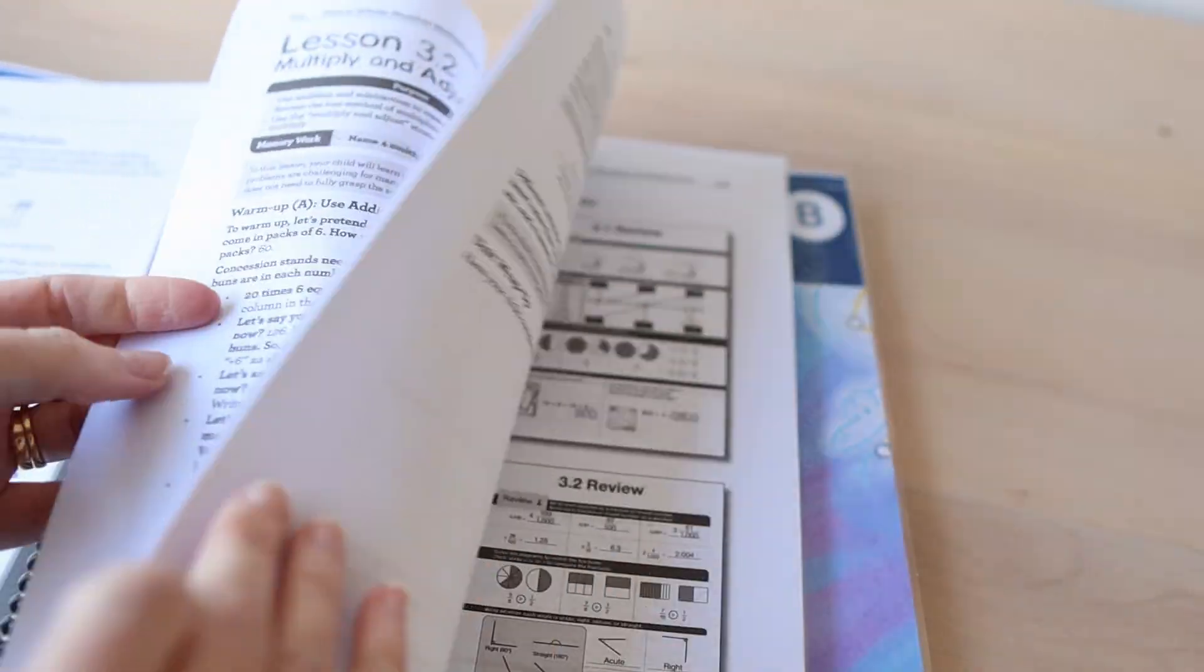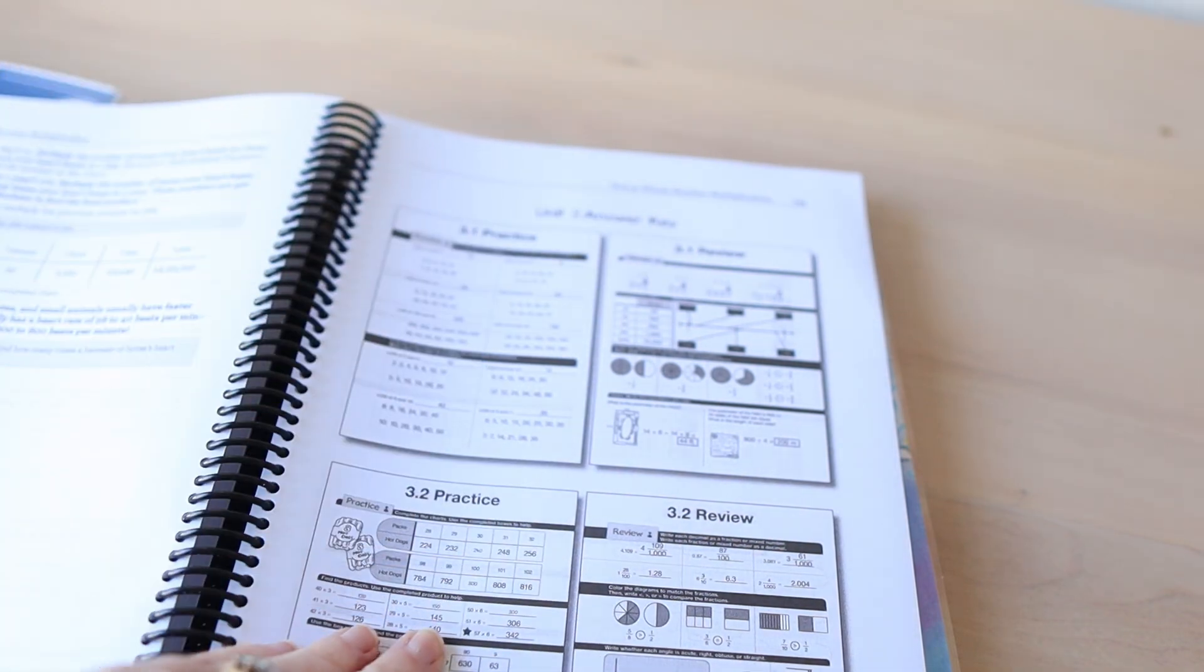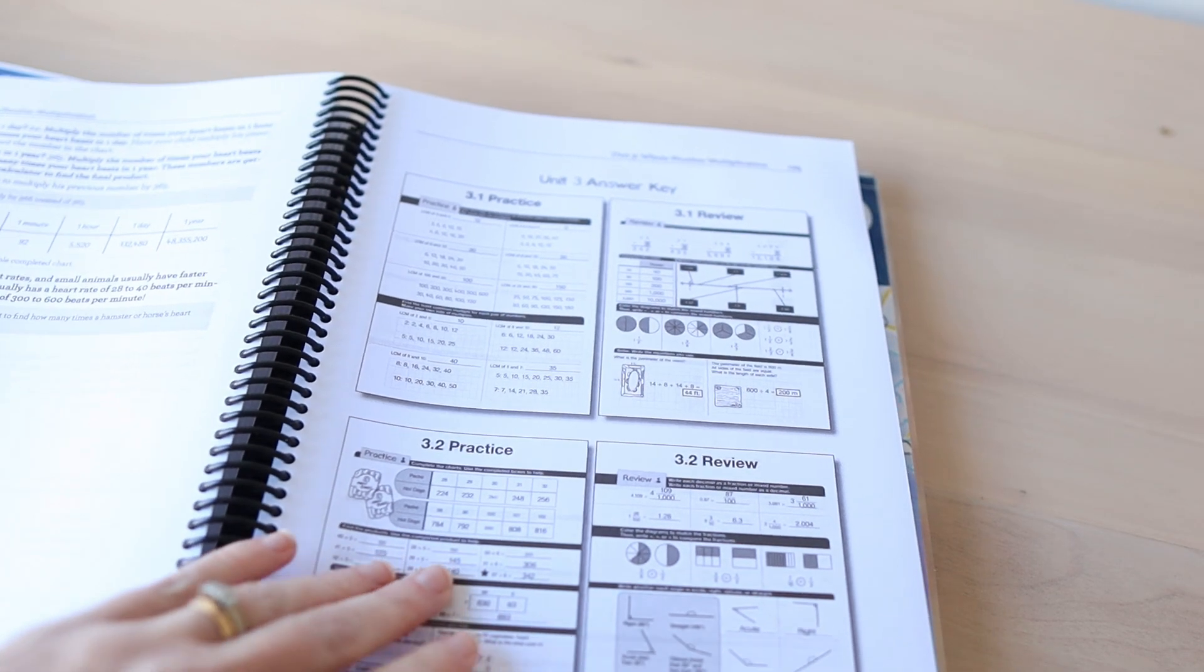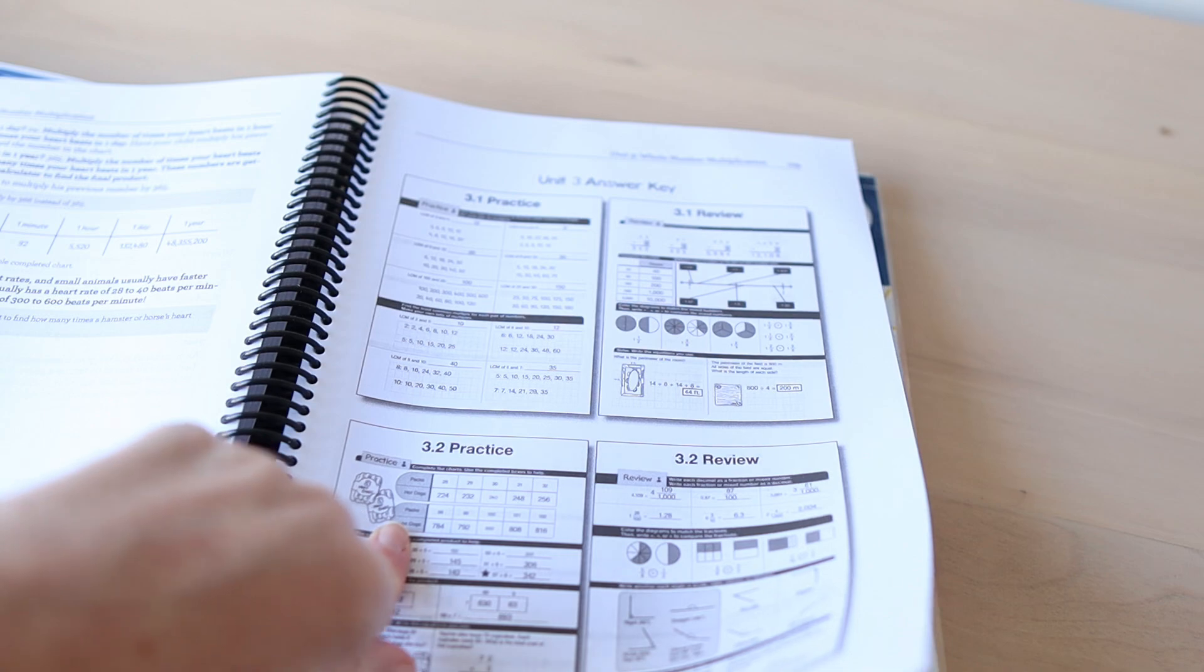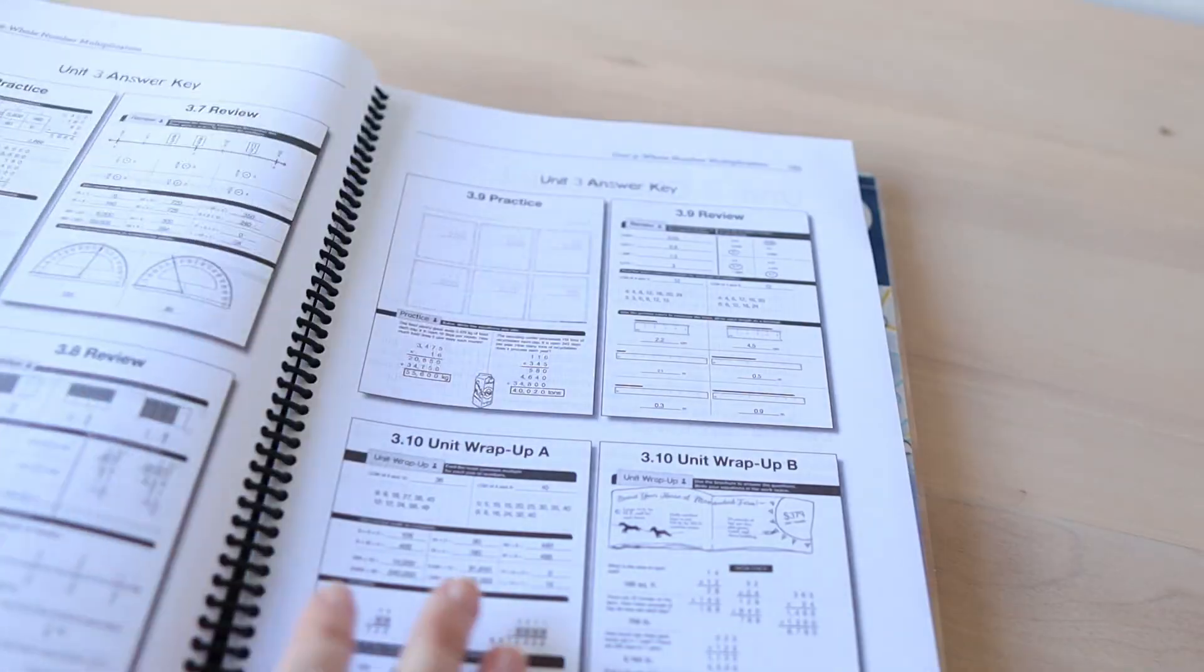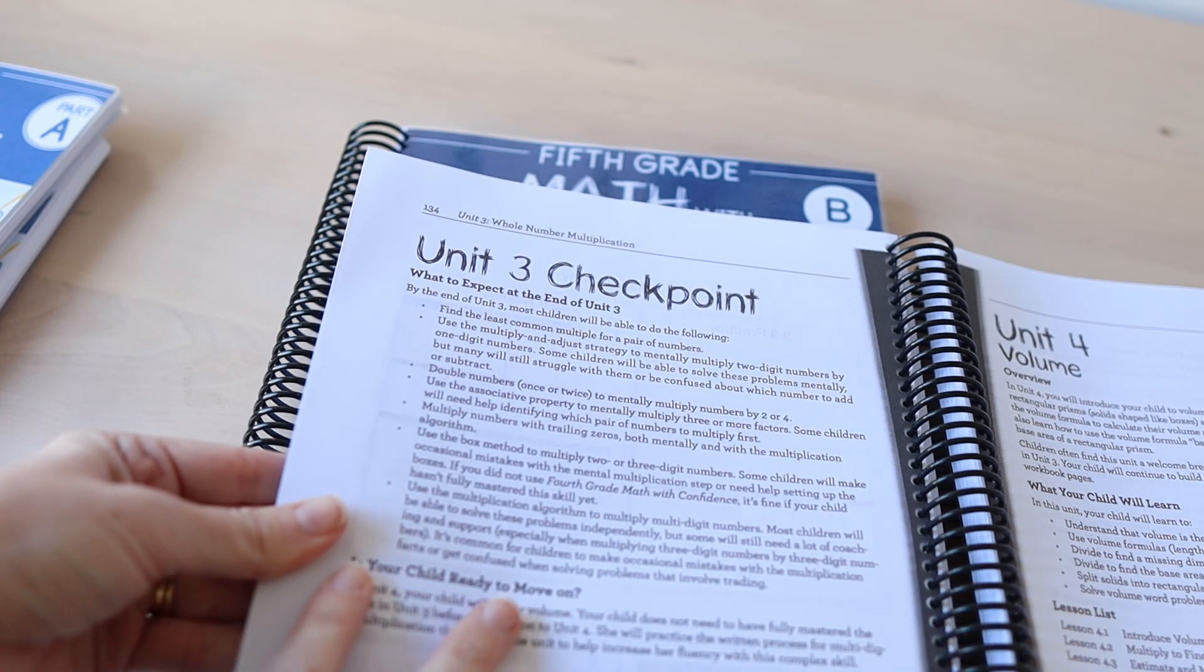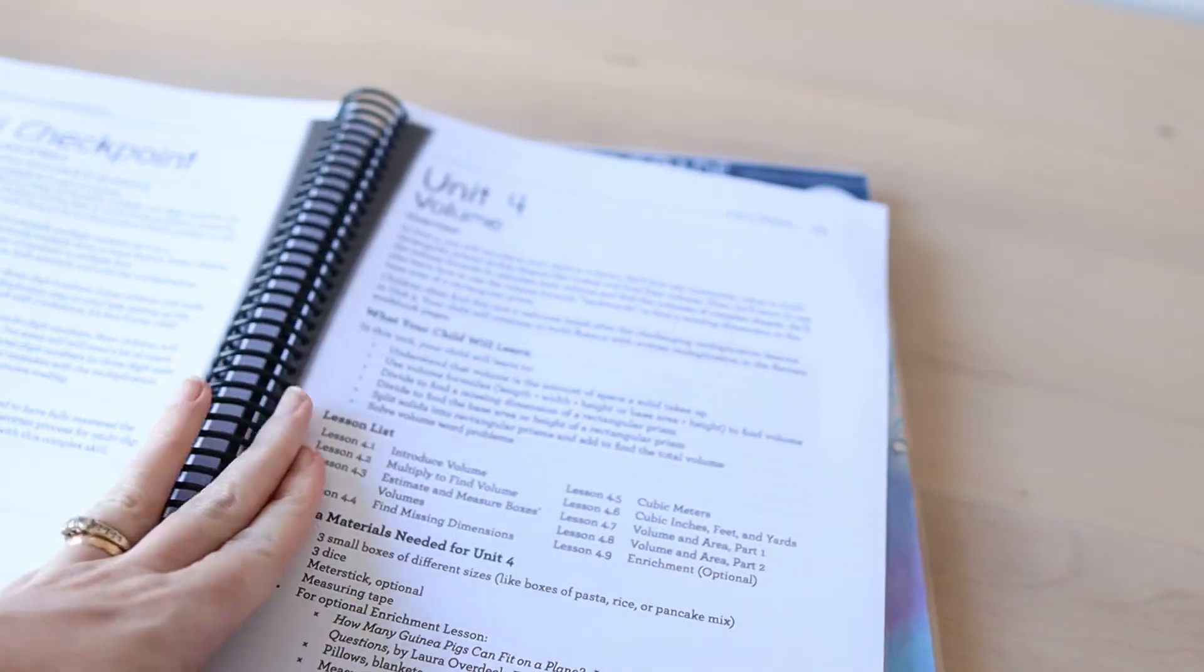At the end of the units you've got your answer key, which this year I'm going to try with my son, actually getting him to grade his own work because I think that will help. Get him to grade his own work, not to correct it necessarily but to grade it and then he can bring it to me and we can correct it together. You've got answer key at the end of the unit and then you also always have a unit checkpoint so you can assess whether your child is ready to move on or if you need to do some more practice.